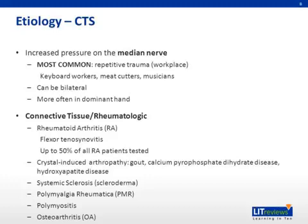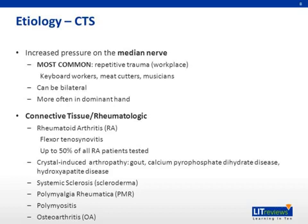Connective tissue diseases are another common culprit etiology of carpal tunnel syndrome, with RA and crystal-induced arthropathies such as gout being most common. Scleroderma, PMR, polymyositis, and OA have also been implicated in patients who develop CTS.